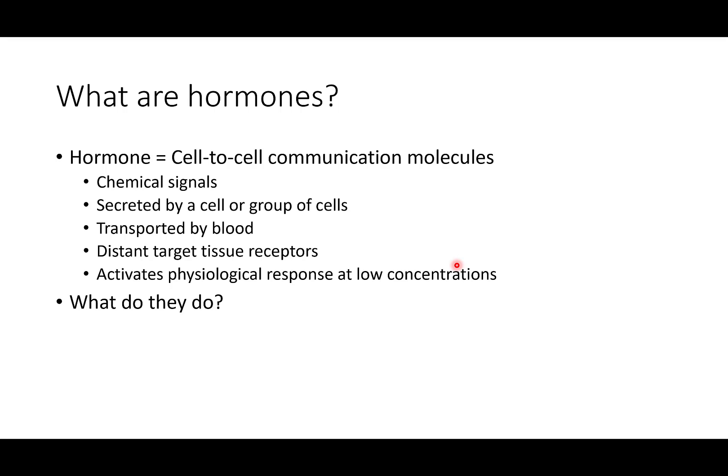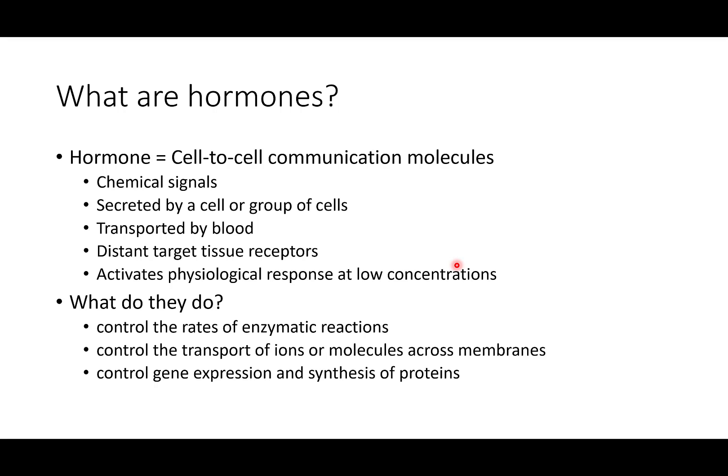What do hormones do? They control the rates of enzymatic reactions. Second, they can control the transport of ions or molecules across cell membranes. When they bind to receptors, they can cause the membrane to become more permeable and activate carrier-mediated proteins to transport substances across — like in the case of insulin.